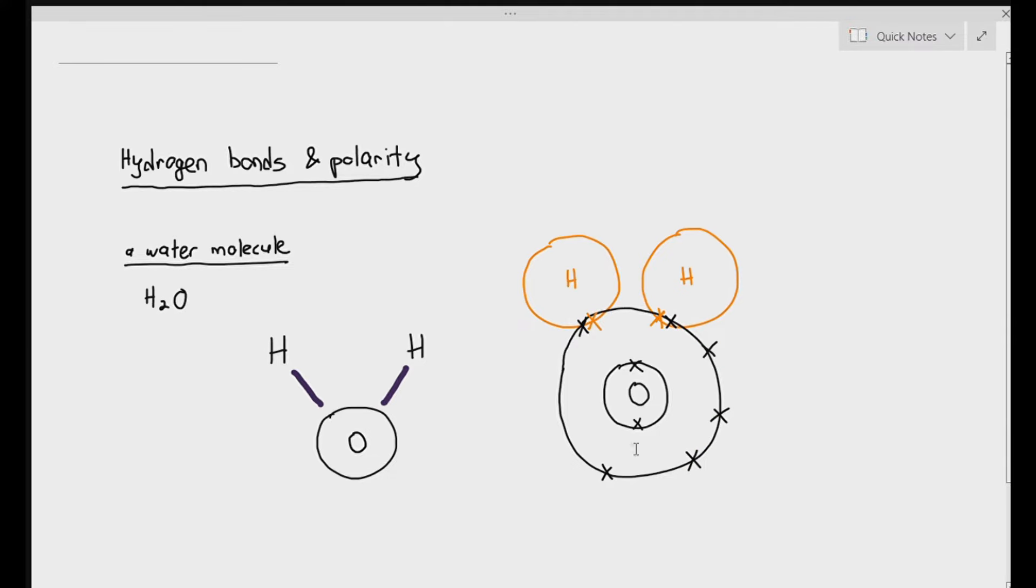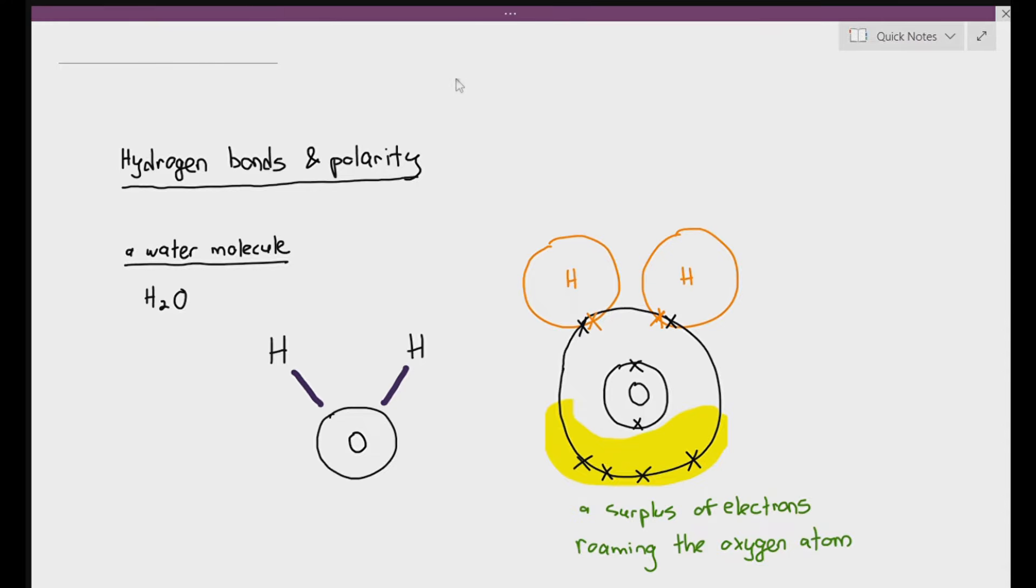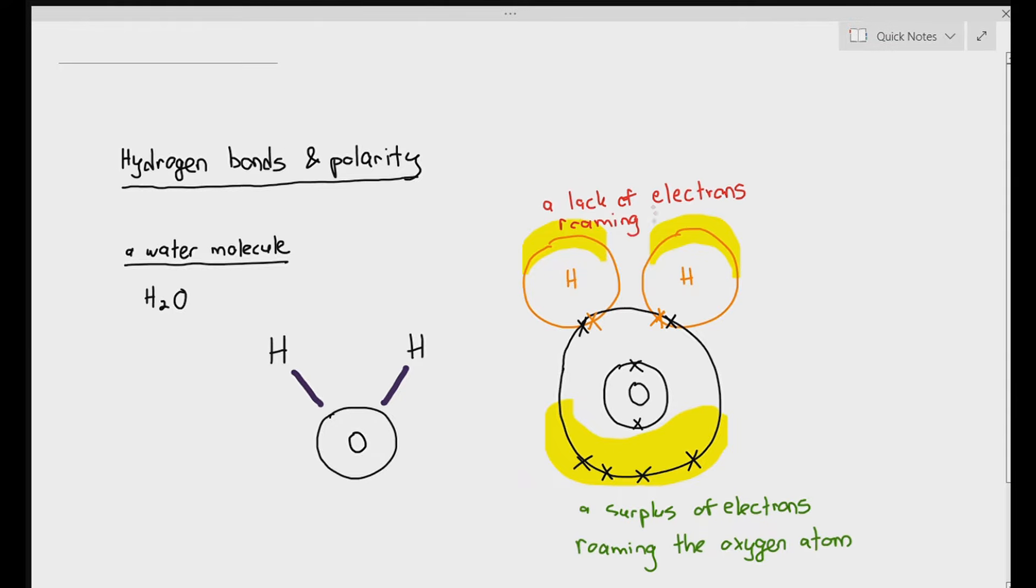Hence, this is how the covalent bond forms between two atoms of hydrogen and one atom of oxygen to form water. The important thing I want you to focus on is those four electrons that I'm selecting over there. If you notice, those four electrons are not shared with hydrogen at all, which means they are free to roam around the highlighted region. The electrons are not always in a fixed position; they're constantly moving around the bottom area. This is what we call a surplus of electrons roaming the oxygen end of the atom.